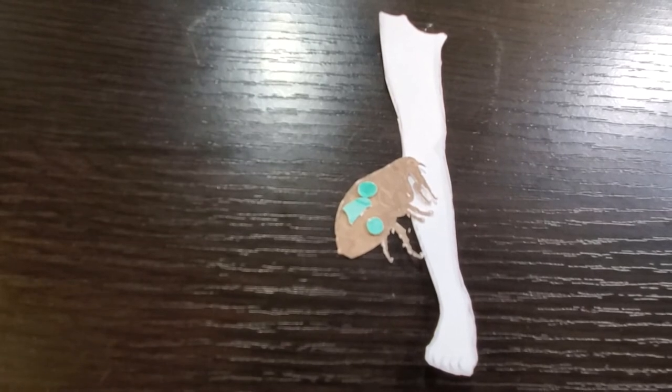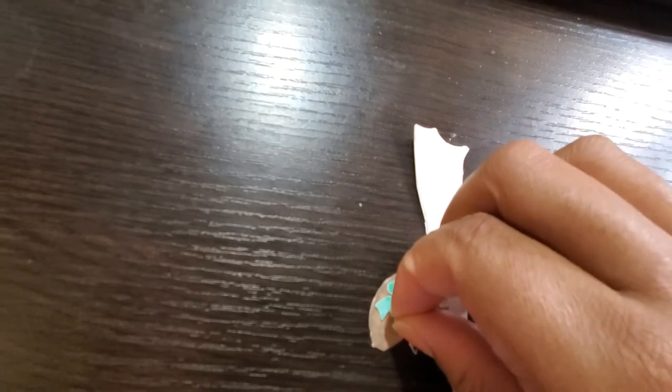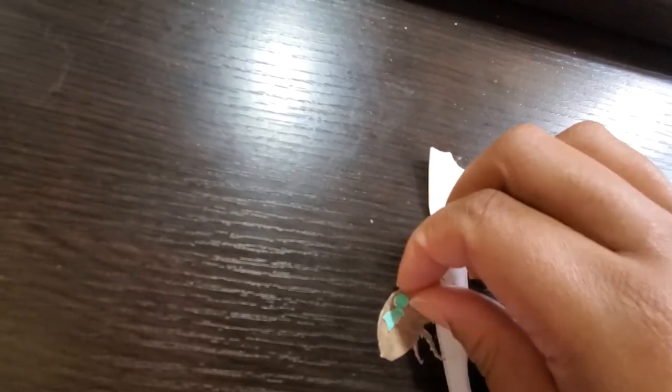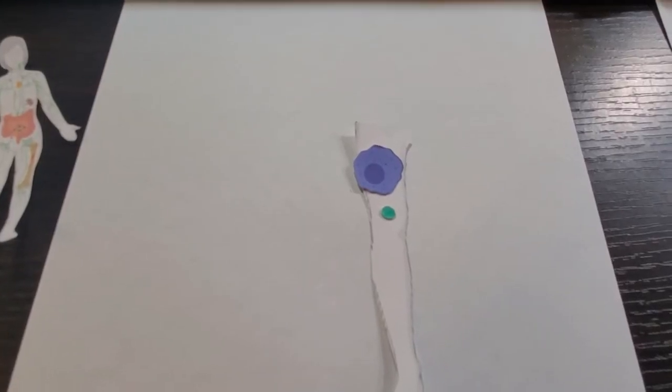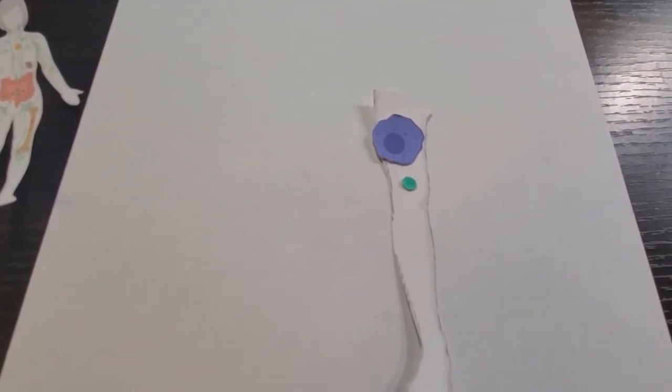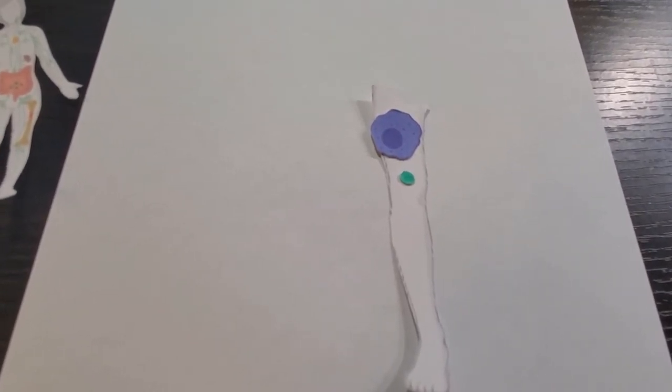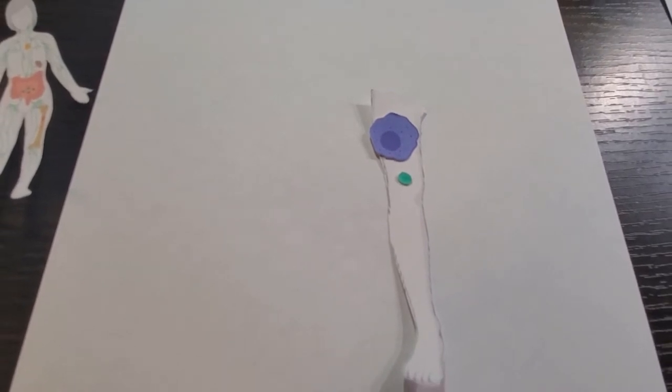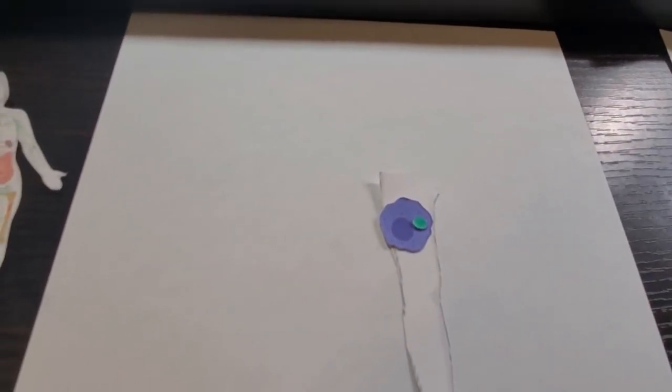Yersinia pestis is introduced into the human host via the bite of an infected flea. It moves from the gut of the flea and is transferred into the human host at the site of the bite. Here at the bite site the bacteria is faced with host phagocytes including neutrophils and macrophages. Upon being phagocytized by neutrophils the bacterium usually dies. However the important players here are the macrophages. Yersinia pestis preferentially infects macrophages because they can survive inside of them.